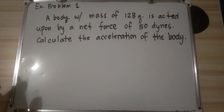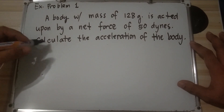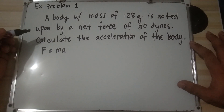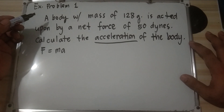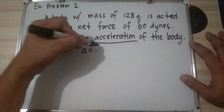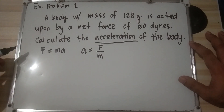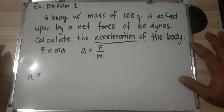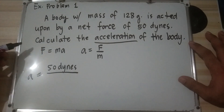Example, Problem 1: A body with a mass of 128 grams is acted upon by a net force of 50 dynes. Calculate the acceleration of the body. From the formula F equals MA, we need to solve for A. Dividing both sides by mass, we get A equals F over M, which is force over mass. Force given is 50 dynes.